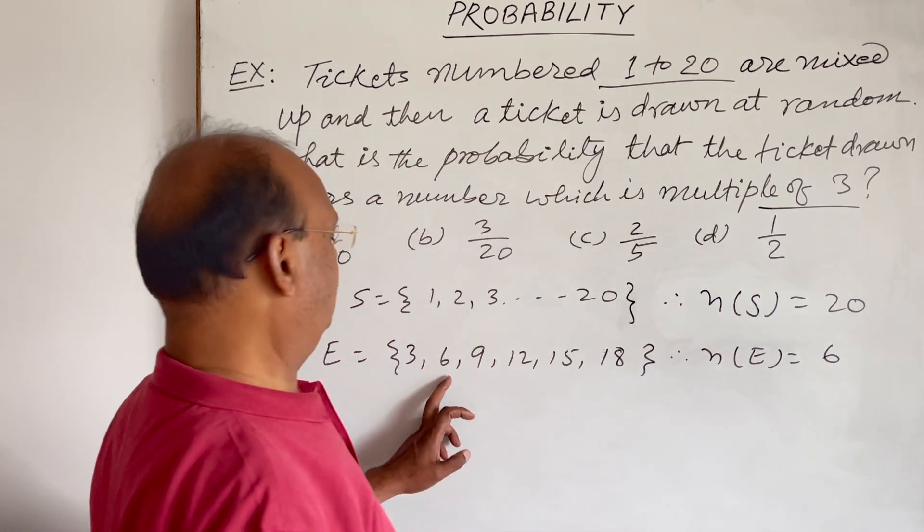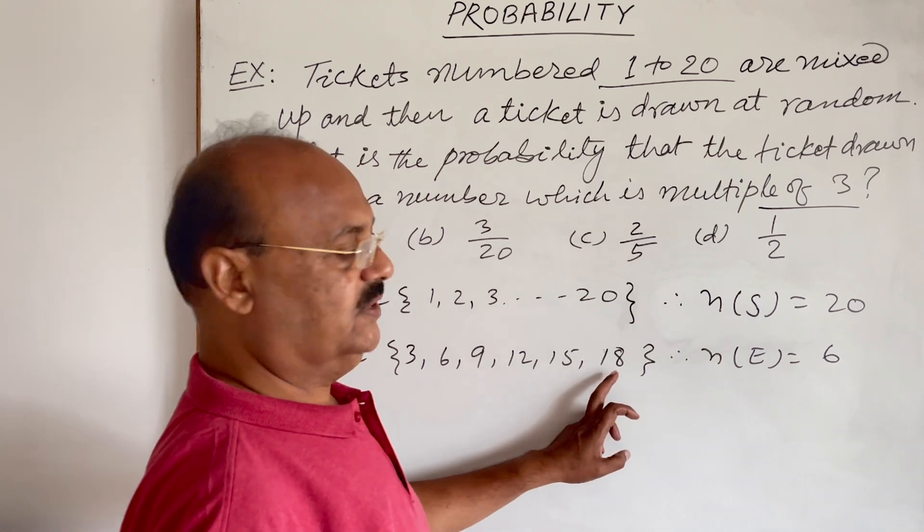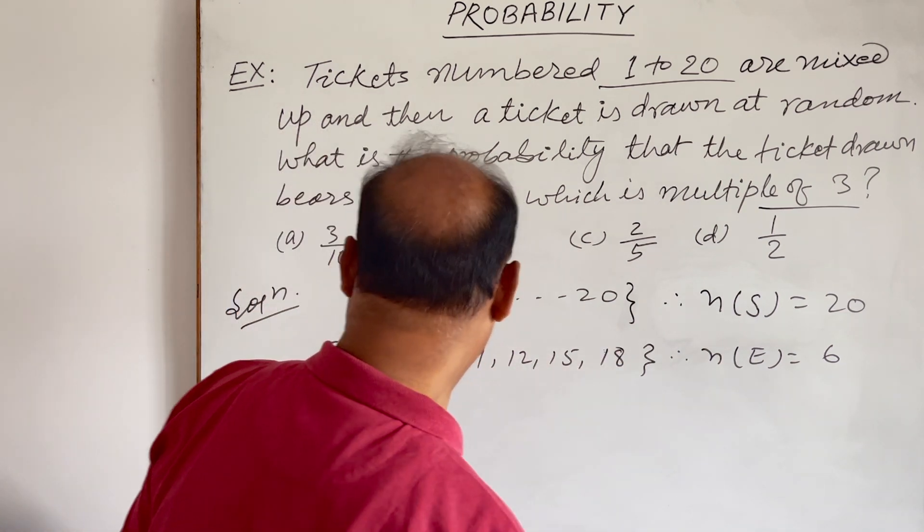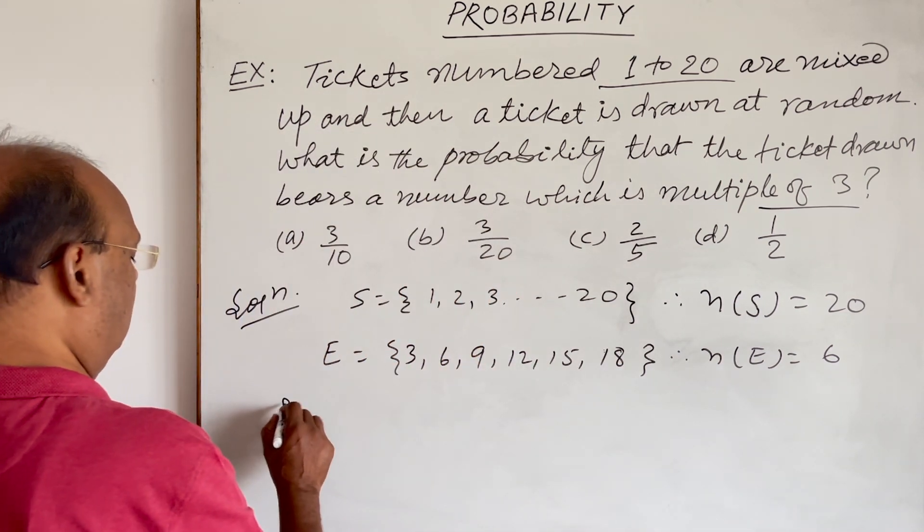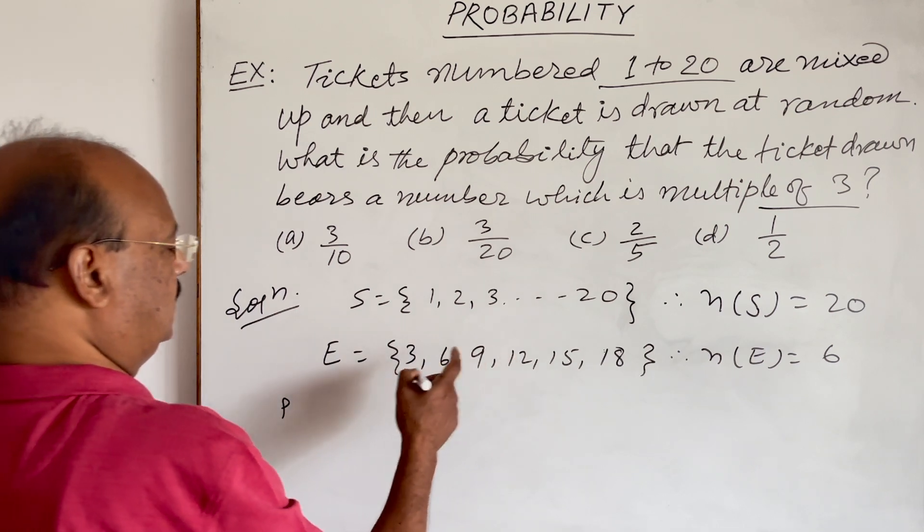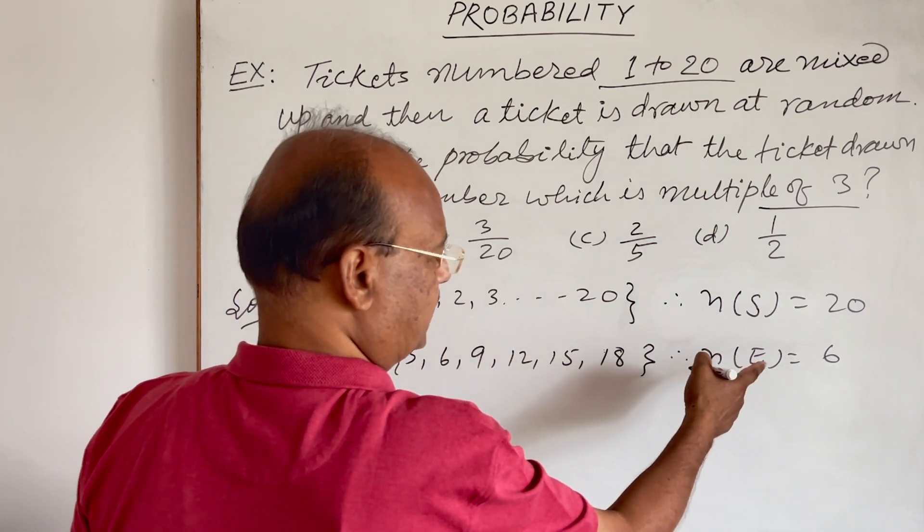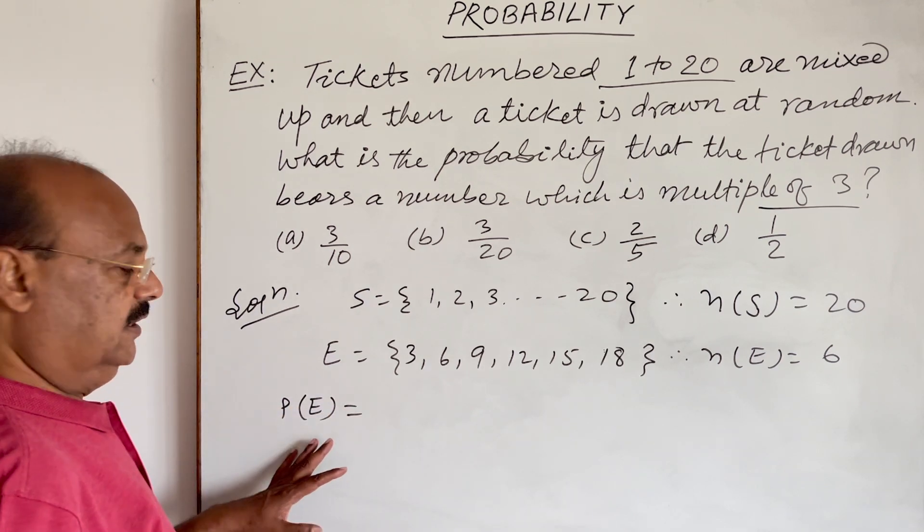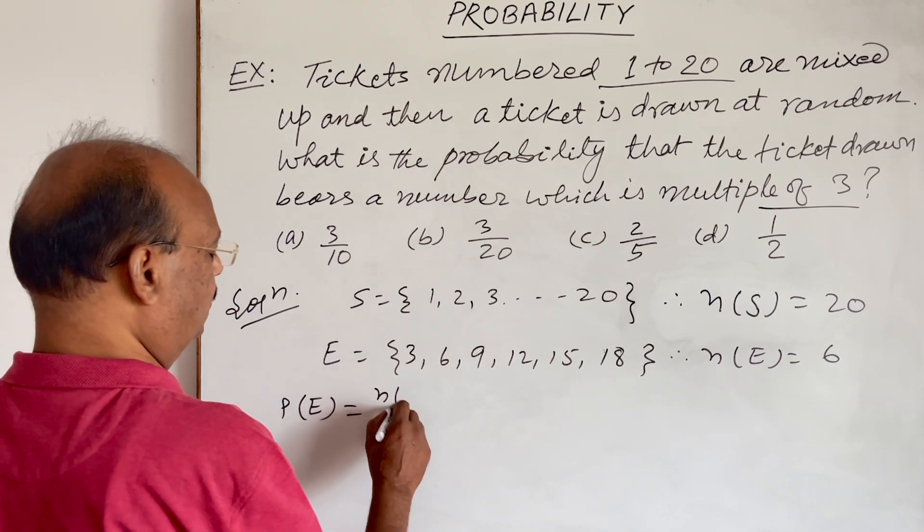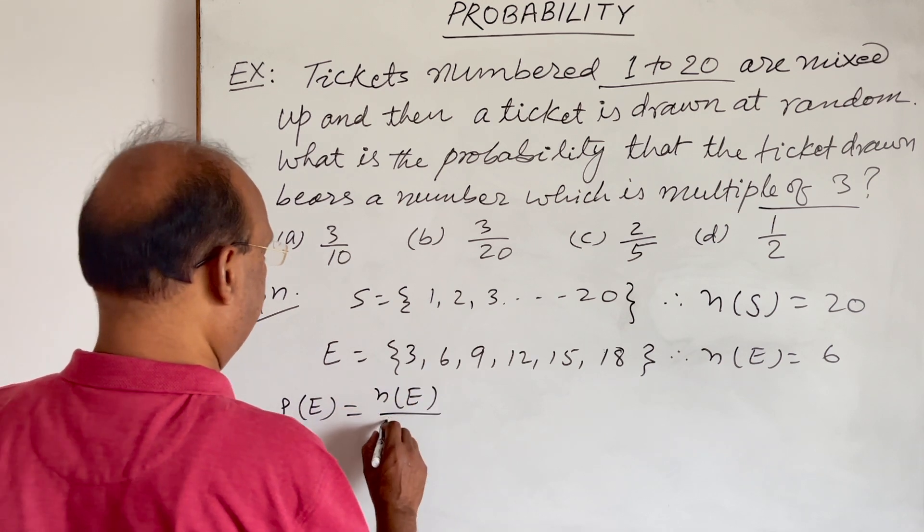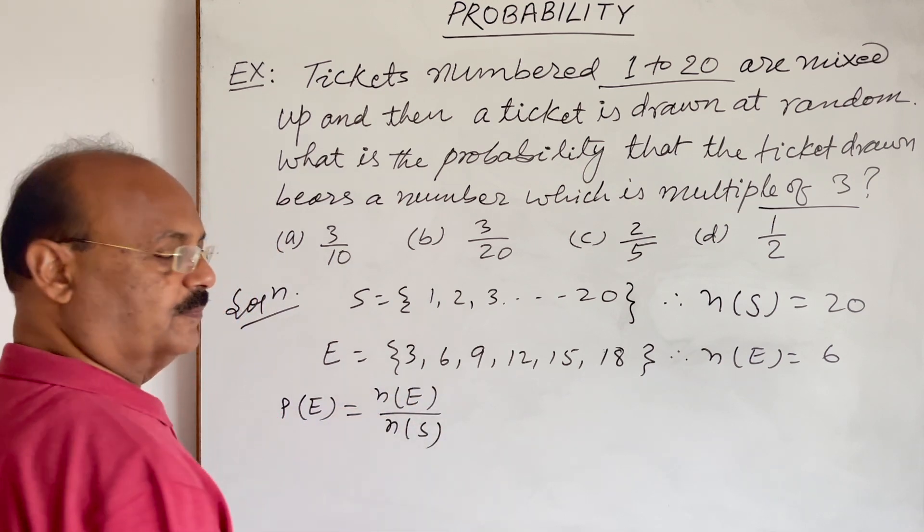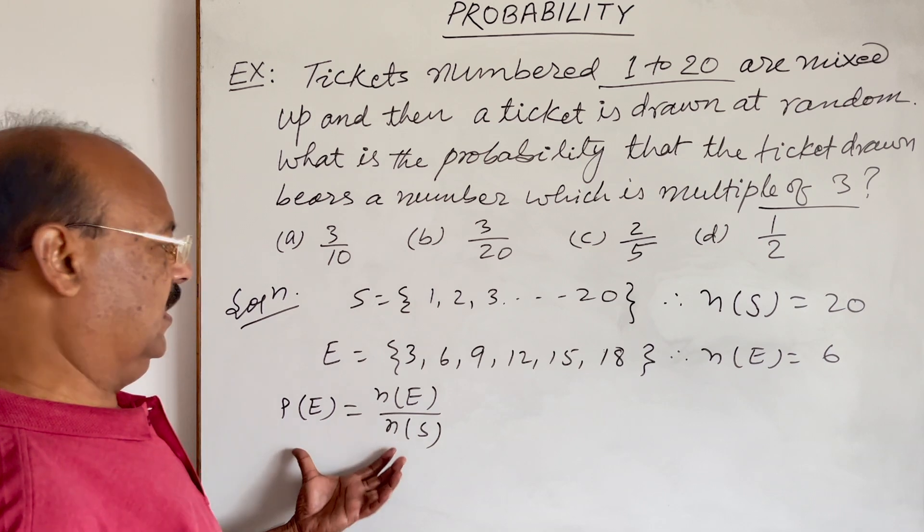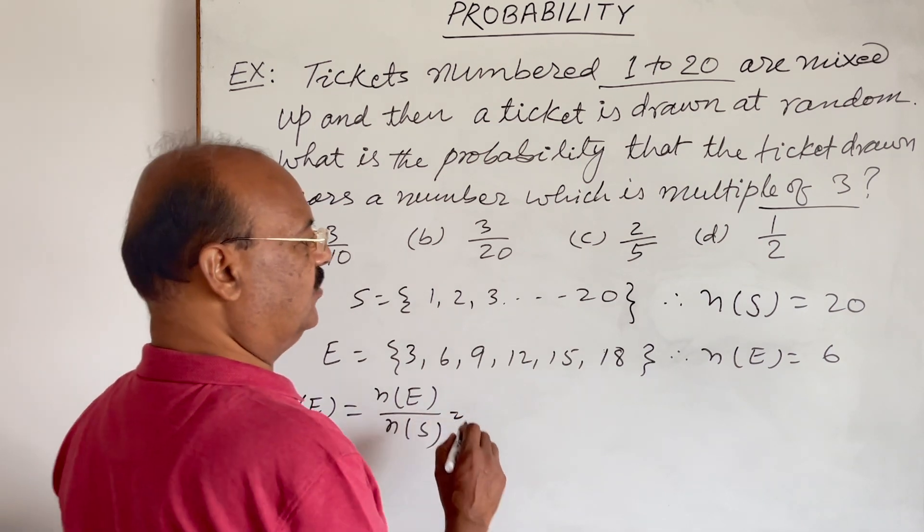As you know, the probability of finding the outcome expected in this event, that is probability of E, we use the formula here: P(E) is equal to n(E) divided by n(S). We know this formula, and n(E) is equal to 6.